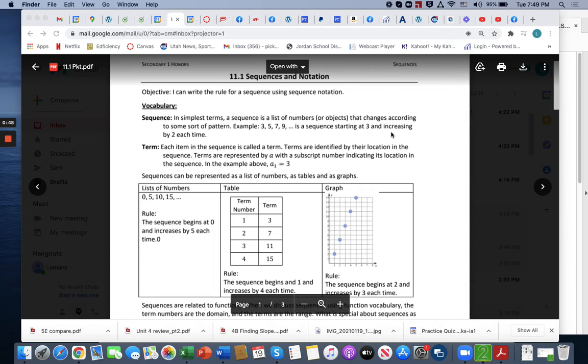And we also have things called a term. Each item in this sequence is called a term. Terms are identified by their location in the sequence. Terms are represented by a with a subscript number indicating its location in the sequence. In the example above, a₁ equals 3 because it is the first term in the sequence. a₂ would be 5, a₃ would be 7, and a₄ would be 9.